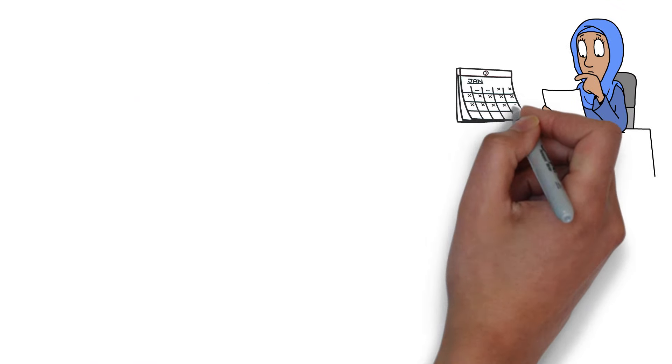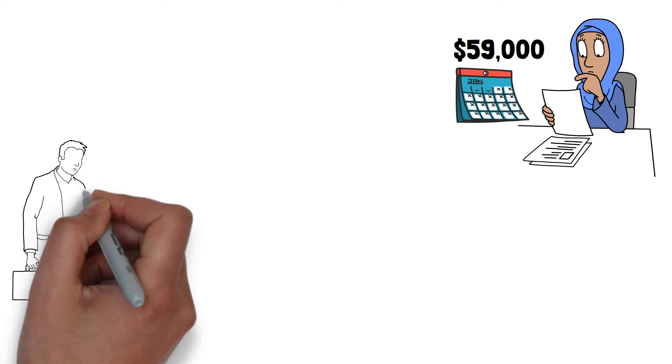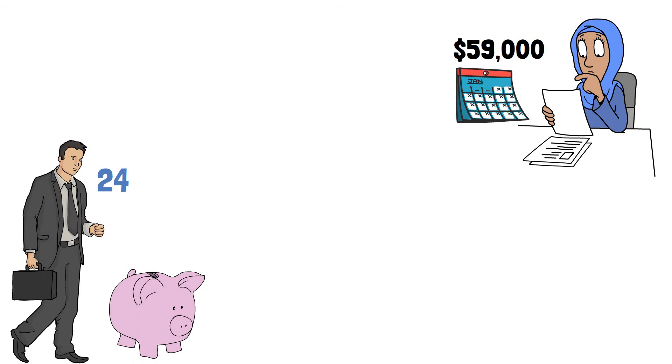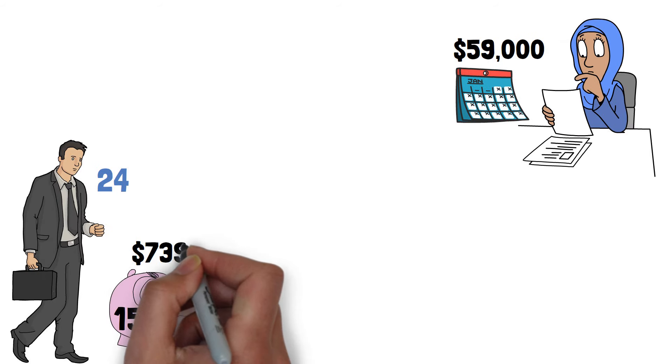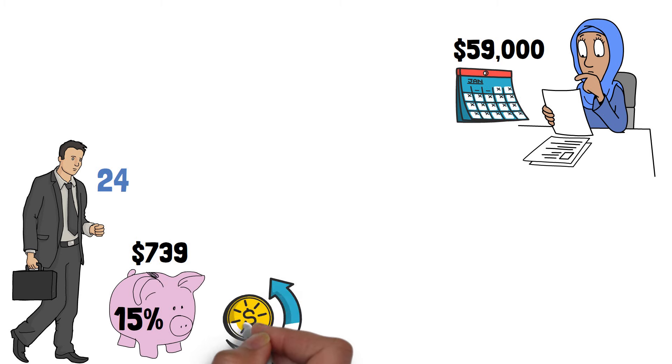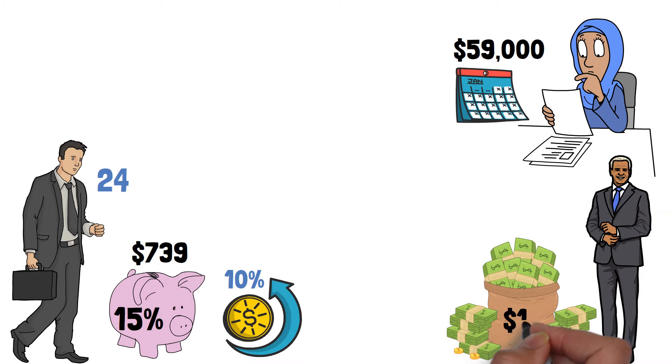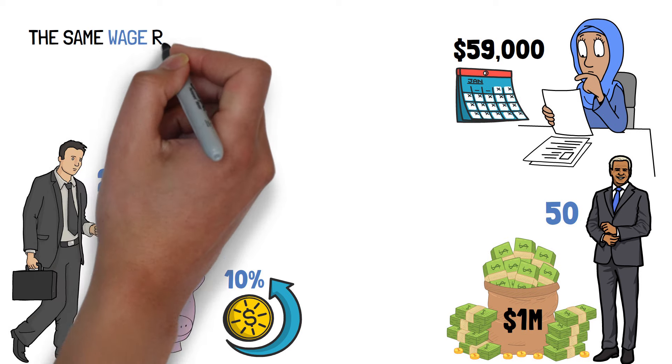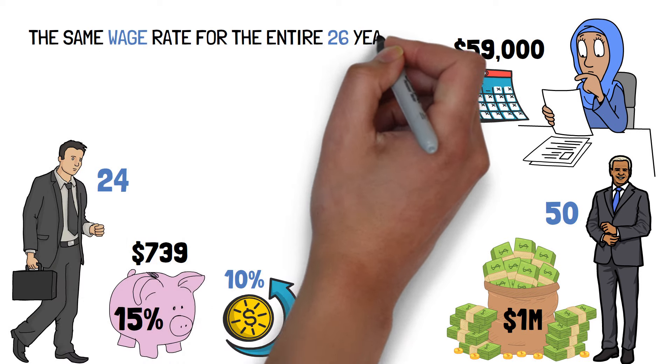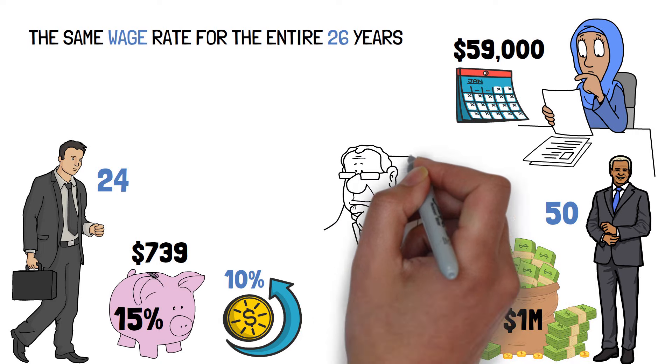Consider a typical annual salary of $59,000. Starting at the age of 24, it might save 15% of their income, or $739 each month, at a 10% rate of return, and have more than a million dollars by the age of 50. This also assumes staying at the same wage rate for the entire 26 years.